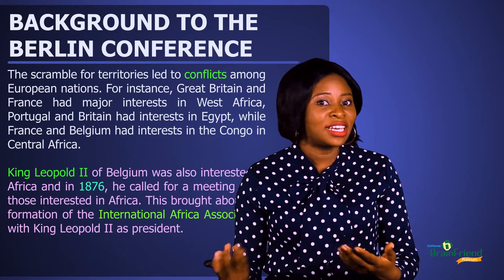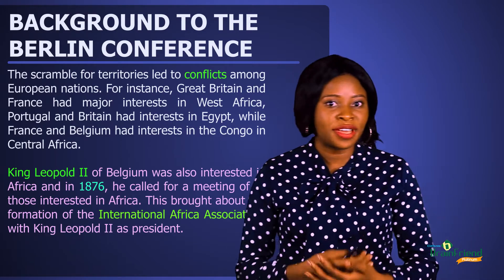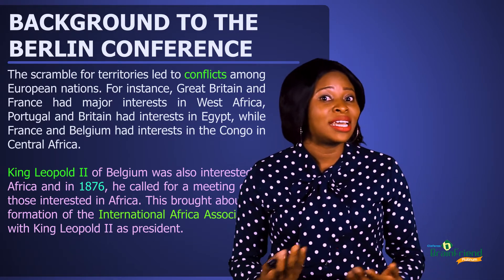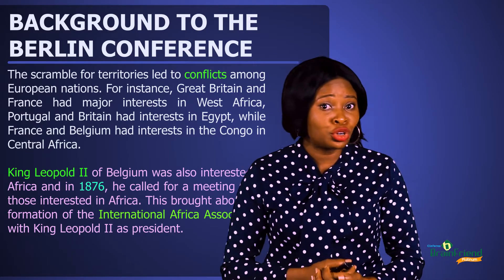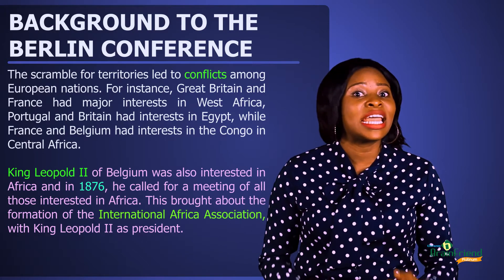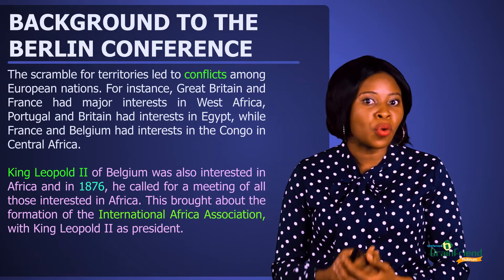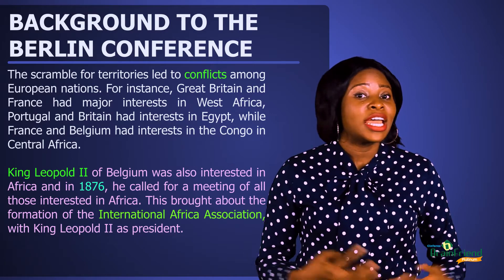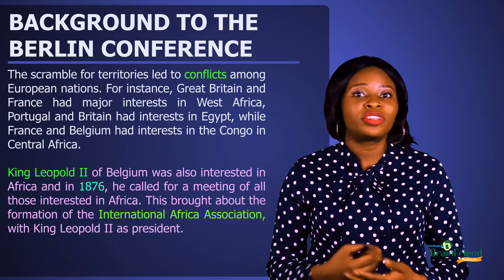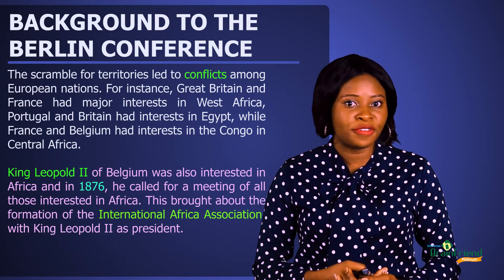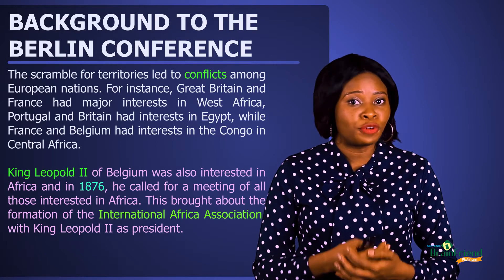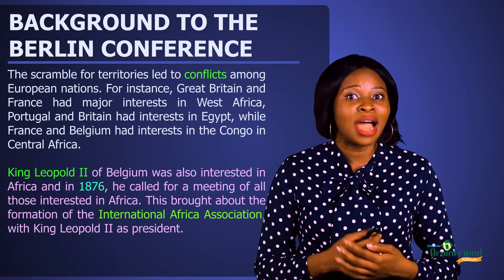Various European nations had interests in the same areas at the same time. For instance, Britain and France had interests in West Africa, Britain and Portugal had interests in Egypt, while Belgium and France had interests in Central Africa, particularly the Congo. In the year 1876, King Leopold II of Belgium called for a meeting for all those countries interested in Africa. This meeting brought about the formation of the International Africa Association, and King Leopold II was made the president of this association.